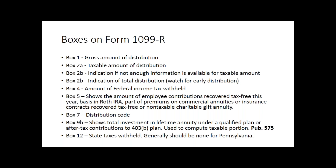Box 5 is a unique box — it shows how much of the employee's own money was recovered tax-free during the year. There may be some changes between how much is reportable in box 1 and how much is taxable in box 2A. Often, box 5 will help you indicate why that amount is different. There may be some portion of the employee's own money coming back to them as a tax-free recovery of basis — we'll talk about that particularly in context with Pennsylvania. Hopefully the third-party administrator knows to put the correct amount in box 5 and has corrected box 2A accordingly.